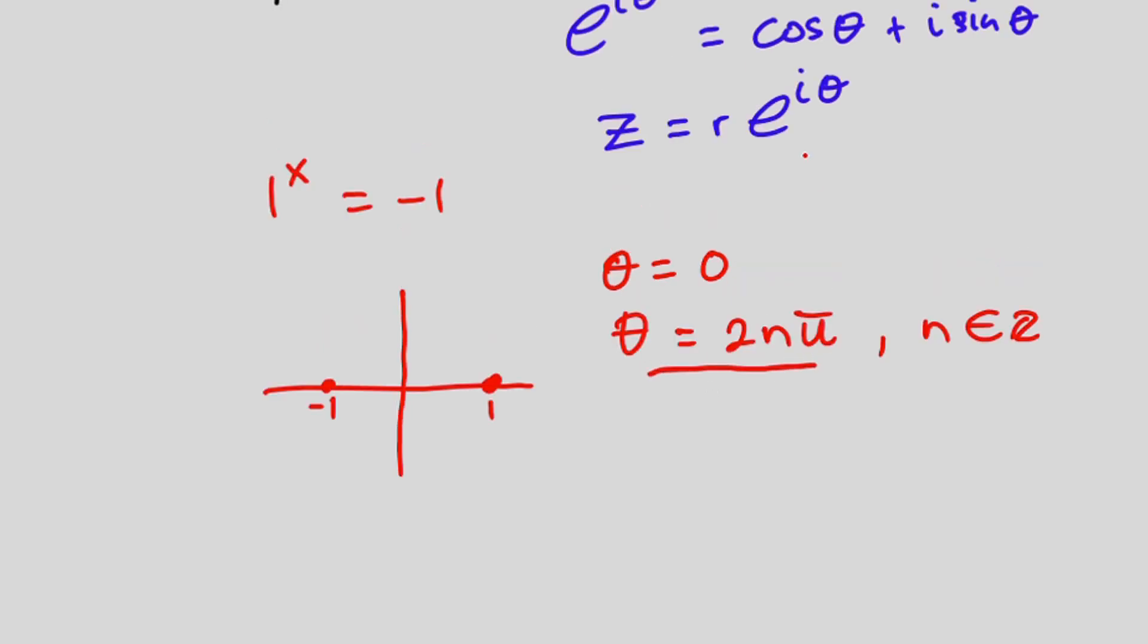Now if we substitute this into Euler's equation we're going to get the right hand side to be one then the left hand side we're going to get e to the power, so in all we're going to be getting 1 is equal to e to the power 2n pi i. So we'll come to this one later, let me call it equation star.